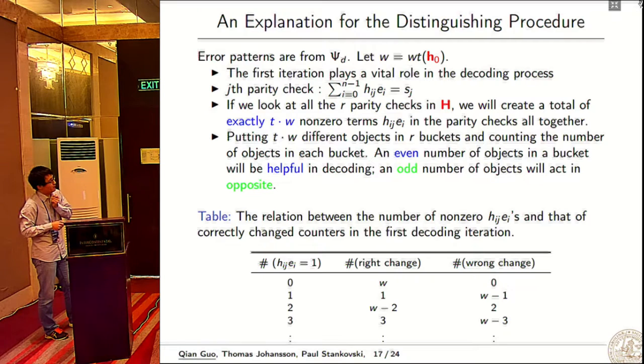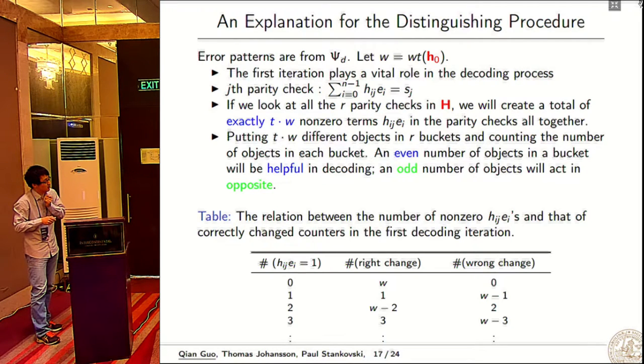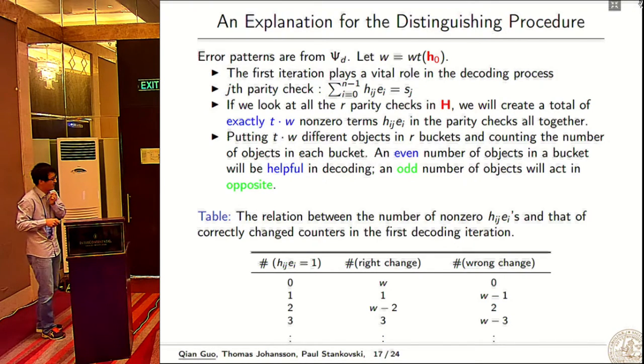If we look at all the r parity checks, we will create exactly t times w nonzero terms, because for each nonzero term h_i g, it will do a cyclic shift and have exactly t nonzero terms. The problem is we put t times w different objects in r buckets because we have r parity check equations, and we count the number of objects in each bucket. Even number of objects will be helpful because one plus one is zero, and odd numbers act oppositely.